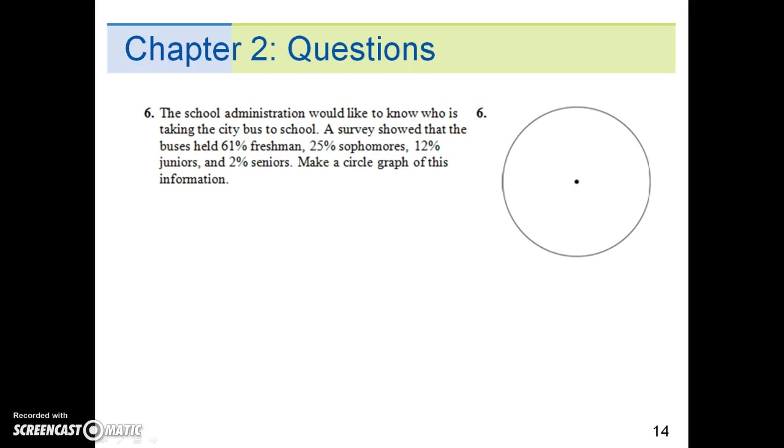The school administration would like to know who is taking the city bus to school. A survey showed that the buses held 61% freshmen, 25% sophomores, 12% juniors, and 2% seniors. Make a circle graph of this information. First, try it on your own, then to verify the results, go to the next slide.